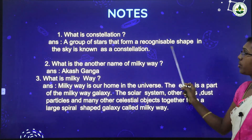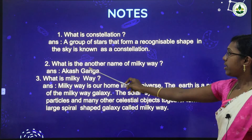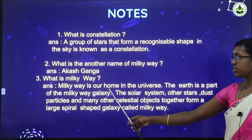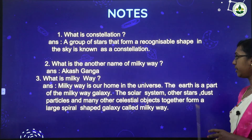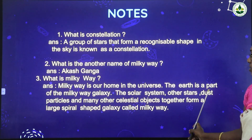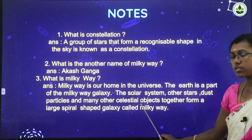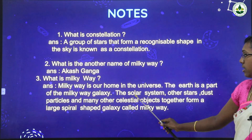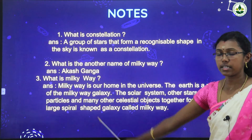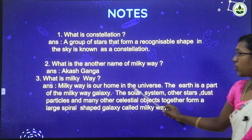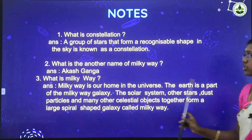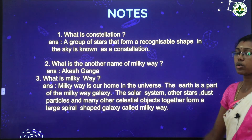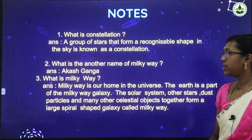For question answers: What is a constellation? A group of stars that form a recognizable shape. What is another name for the Milky Way? Akash Ganga. What is the Milky Way? It is our home in the universe. The Earth is a part of the Milky Way. The Milky Way includes the solar system, other stars, dust particles, and many other celestial objects.